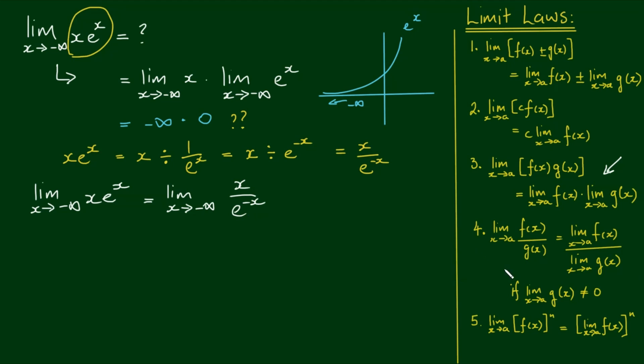is equal to the limit as x approaches negative infinity of x over e to the negative x. This now looks like a case of limit law number 4, which we can separate into the division of the limit as x approaches negative infinity of x divided by the limit as x approaches negative infinity of e to the negative x. And for this one, the top term again goes to negative infinity, but now the bottom term goes to positive infinity.